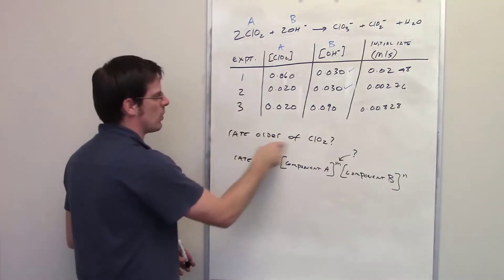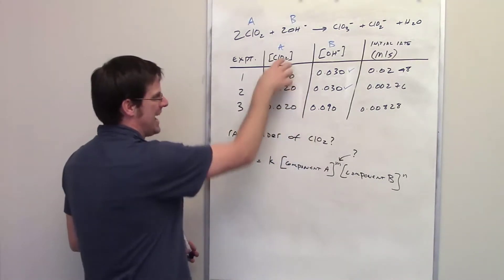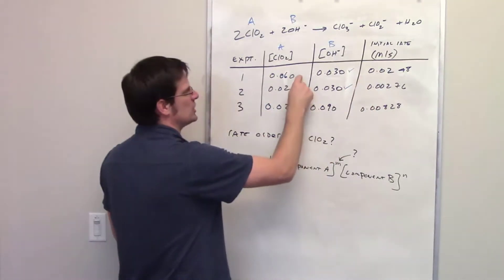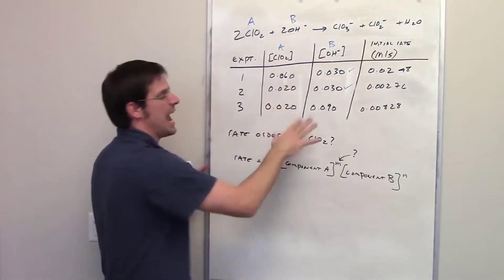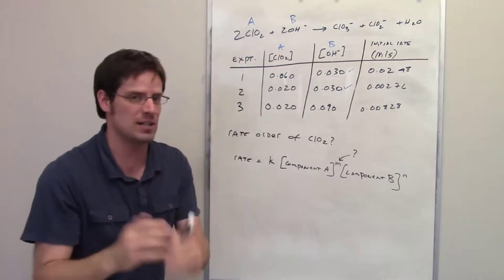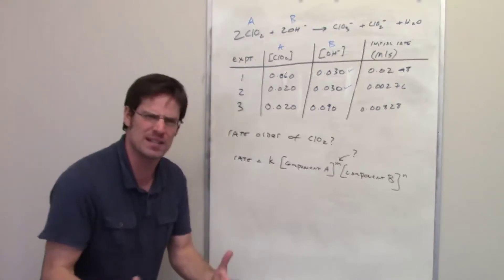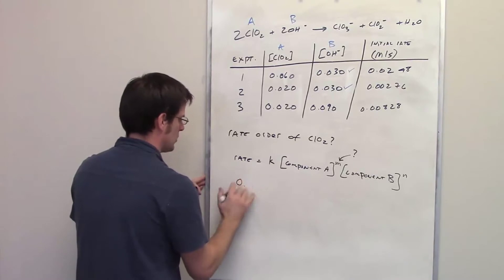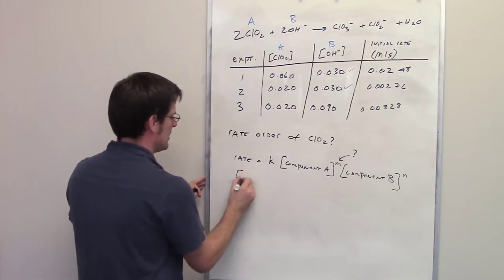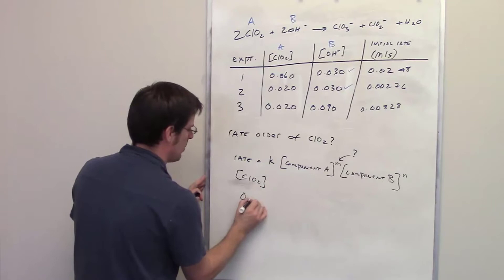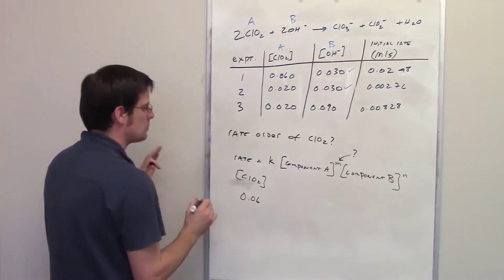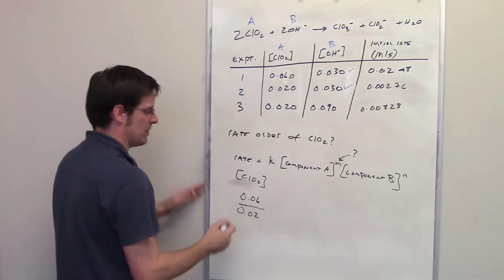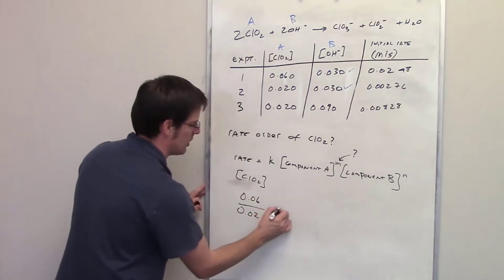I'm ignoring experiment 3 for this question because I've been asked the rate order for chlorine dioxide, component A. I want to know how the rate gets affected when I change the concentration of component A and not B. That's why I only care about experiments 1 and 2. In experiment 1, the concentration of chlorine dioxide was 0.06. In experiment 2, it was 0.02. I divide the big one by the small one and get 3.